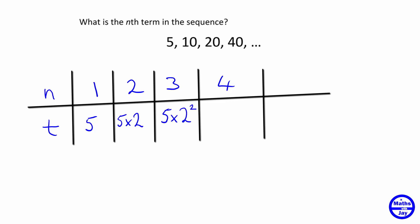And then the fourth term is again multiplying by another 2, so instead of 2 squared it's going to be 2 cubed. 2 cubed is 8, so 5 times 8 gives us 40. Now we can see a nice pattern developing. We could put the fifth term in as well, and that would be 5 times 2 to the power of 4.